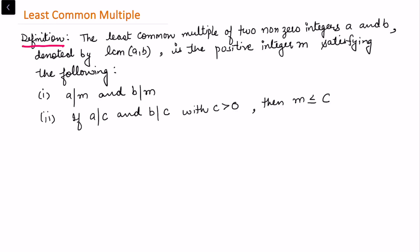In this video we will be defining least common multiple of two non-zero integers a and b. Let us write down the definition of least common multiple. It is defined as the least common multiple of two non-zero integers